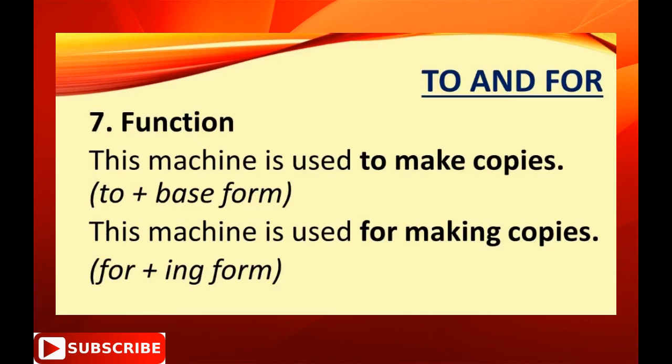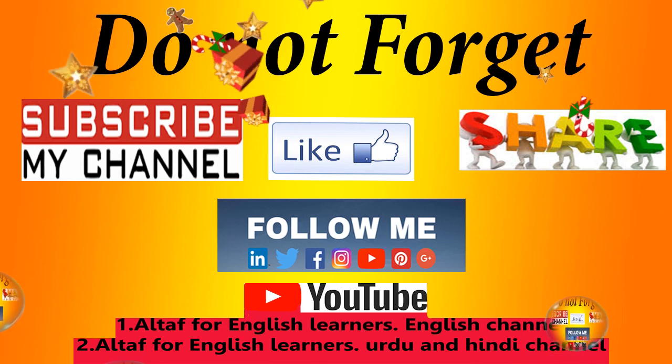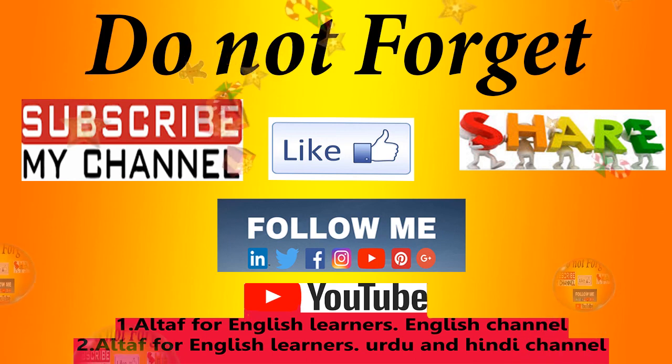'To' is followed by the base form of the verb, and 'for' is followed by the -ing form. For example: 'This machine is used to make copies' versus 'This machine is used for making copies.'